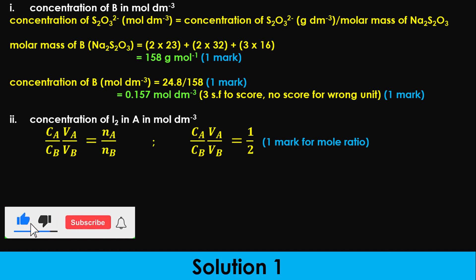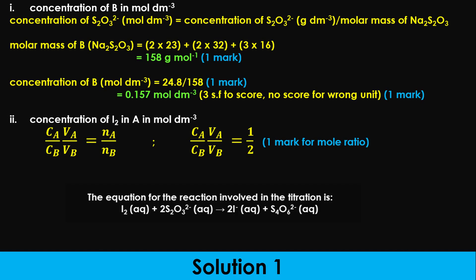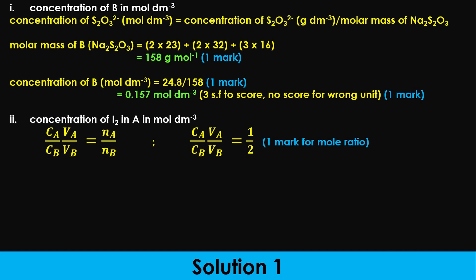Always state the value of the mole ratio as shown in the equation on the screen, otherwise you will lose the mark for that step. Cₐ is the concentration of iodine we are looking for; Cᵦ is 0.157 moles per dm³; Vₐ is the average titer value; Vᵦ is 25 cm³ — the volume of thiosulfate pipetted. The mole ratio of iodine to thiosulfate is 1 over 2. Make Cₐ the subject of the formula, substitute the values, and evaluate correctly.